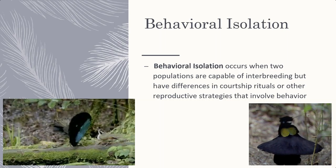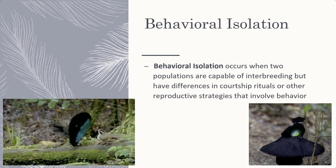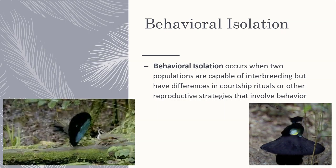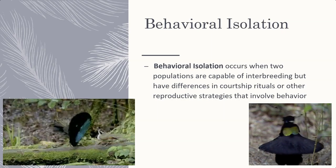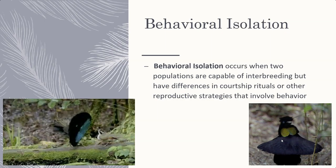One of the main things that has to happen is you need an isolating mechanism. One of the major isolating mechanisms is behavioral isolation. Basically, two populations are capable of interbreeding — all the biology works, they produce viable offspring — but because there are two distinct dancing or courtship rituals, or any kind of reproductive strategies involving behavior, they reproduce differently.